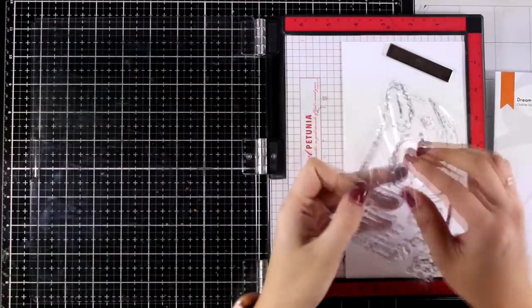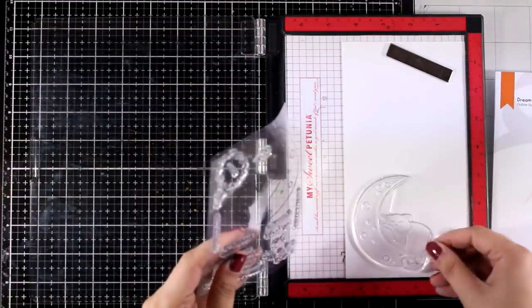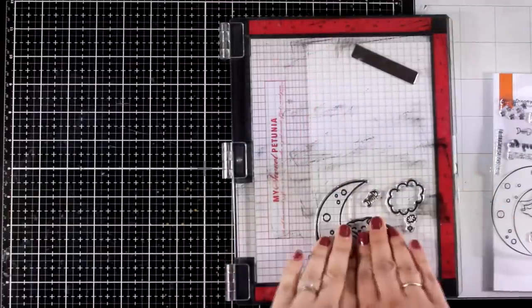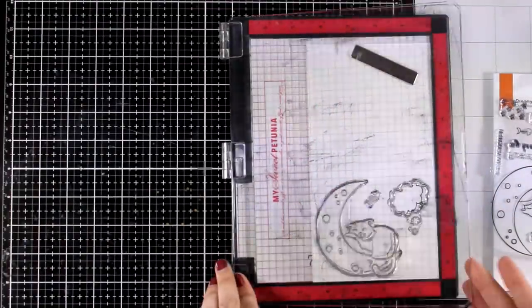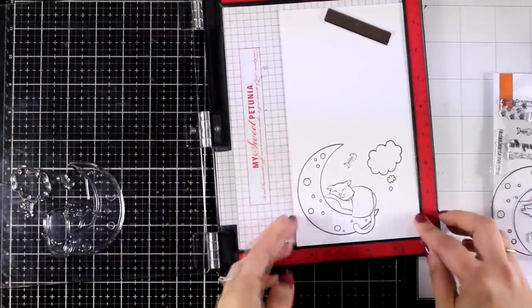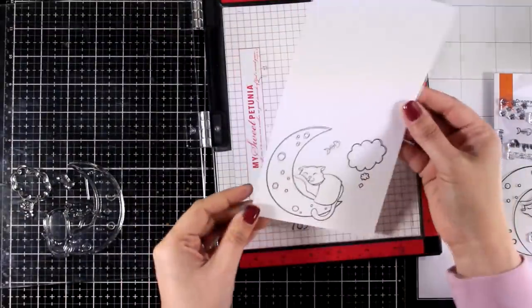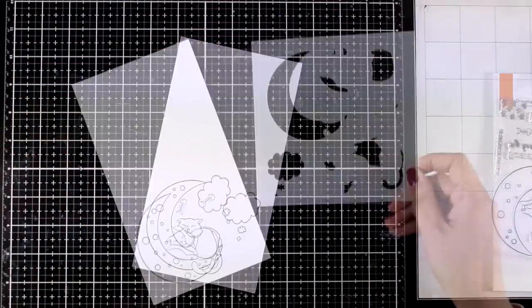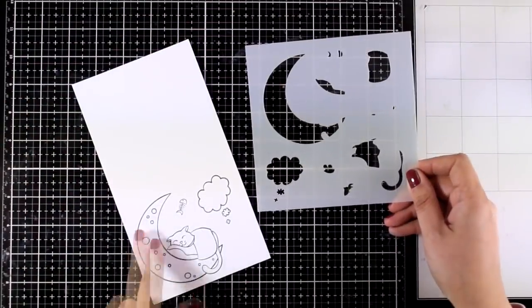And now it is time to do the stamping. I will stamp all the elements that I need to put my card together so I will go with the cat on the moon. I will also stamp the little fish as well as the speech bubble. You can now use your favorite coloring medium to give some color on the images whether they are your colored pencils or your alcohol markers, your watercolors, whatever.